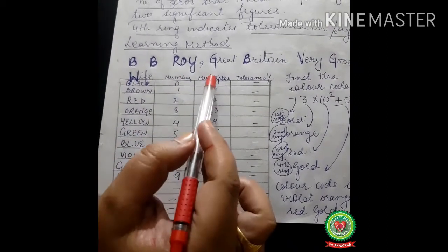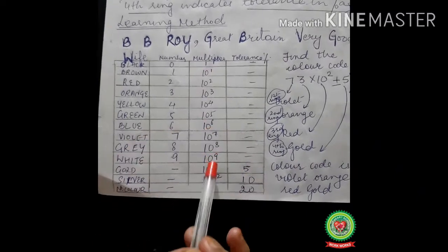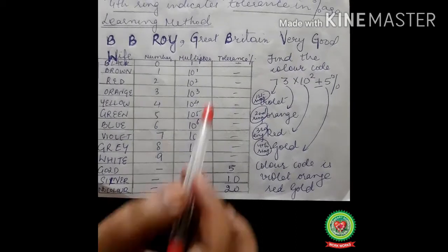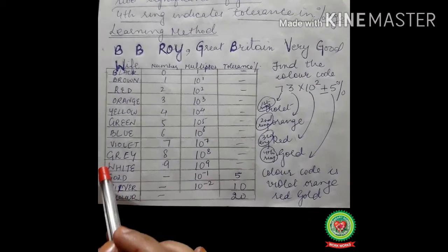Numbers zero through nine, then 10 to the power 0, 10 to the power 1 through 10 to the power 9. Gold and silver have 10 to the power minus 1 and 10 to the power minus 2. Tolerance power is just for these colors: gold, silver, and no color - 5%, 10%, and 20%.